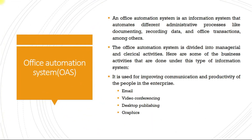Office automation system is an information system that automates different administrative processes like documenting, recording data, and office transactions, among others. It is divided into managerial and clerical activities. Business activities carried out under this system include email, video conferencing, desktop publishing, and graphics.